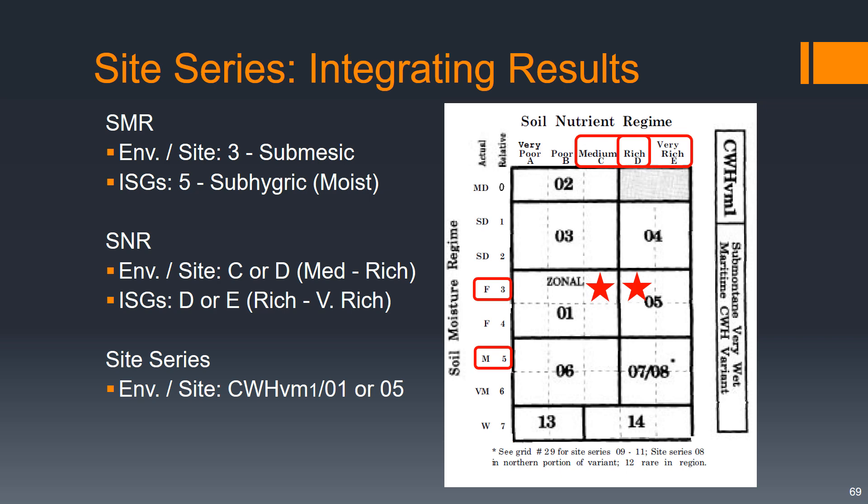For site series, our environmental analysis led us to a site series of CWH VM 101 or 05. Our indicator species groups led us to a site series of CWH VM 107. And the vegetation tables came in in between at CWH VM 105.